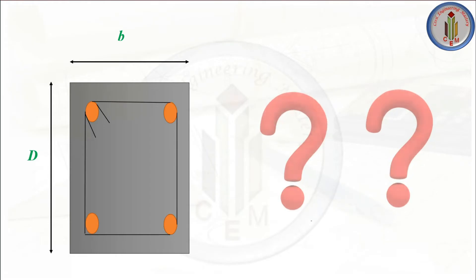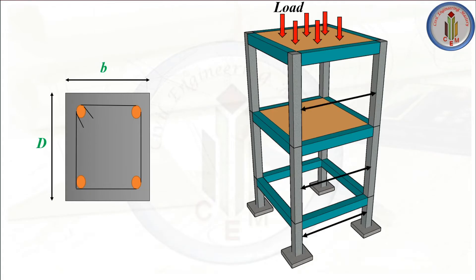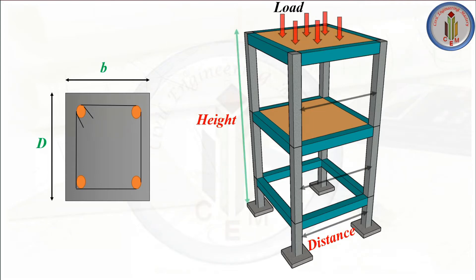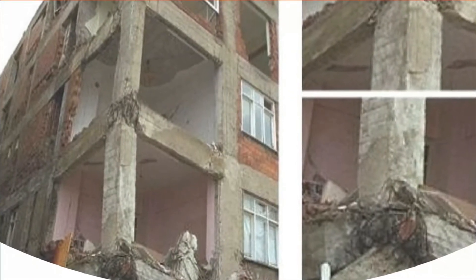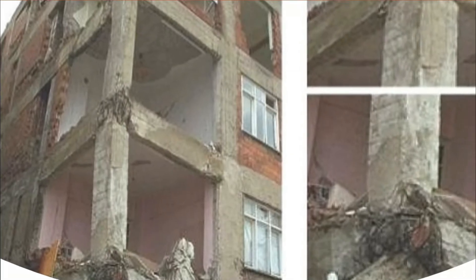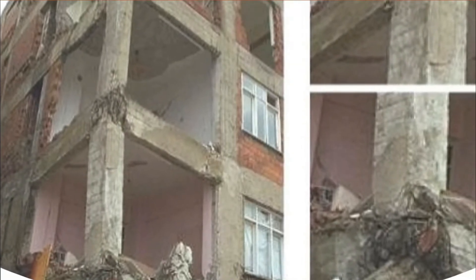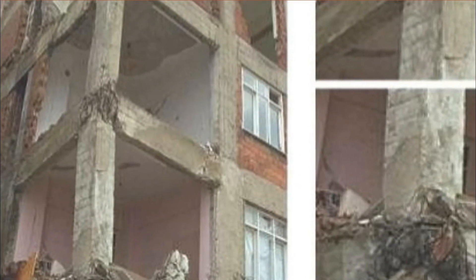There are some factors we need to consider while finding out the size of the column. The size of the column depends on loads coming on the structure, distance between the columns, and height of the building. These are the three major important factors. If the load coming on the structure is large and we don't provide the adequate size of the column, the structure may lead to collapse. Columns are a major structural element transferring the superstructure load to the foundation.